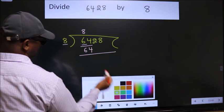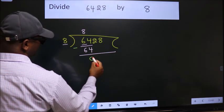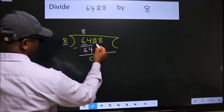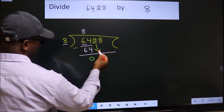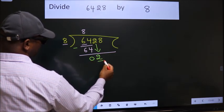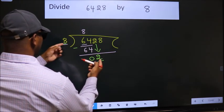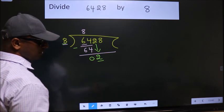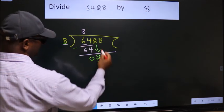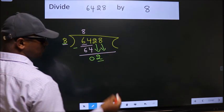Now we should subtract. We get zero. After this, bring down the beside number, so 2 down. Here we have 2. 2 is smaller than 8, so we should bring down the second number.